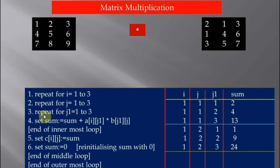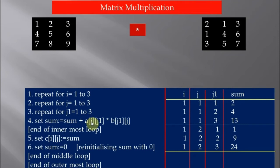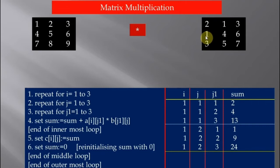The innermost loop runs again. The value of j1 is incremented by 1 and becomes 2. The current value of sum is 2, so it becomes 2 plus a12 multiplied by b21. Why a12? Because j1 is now 2. b21 equals 1, so 2 times 1 is 2. Previous sum was 2, so 2 plus 2 gives a current sum of 4.